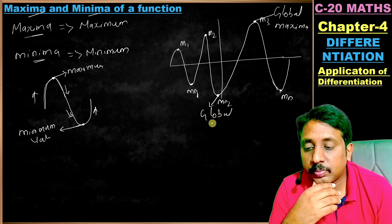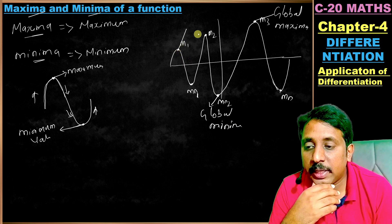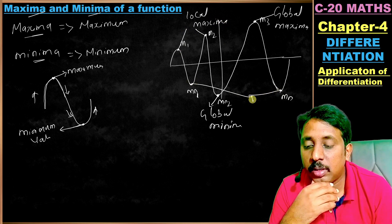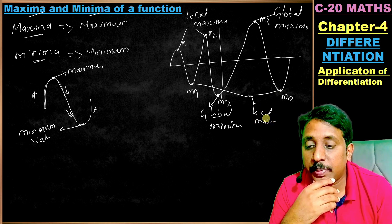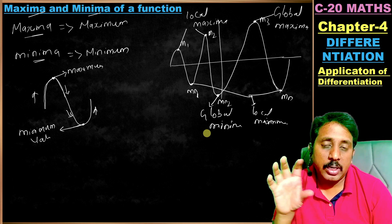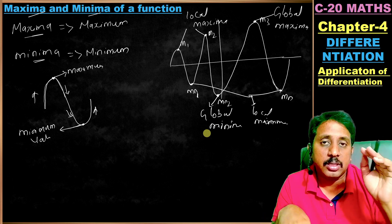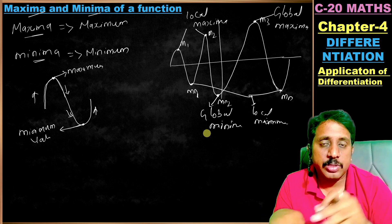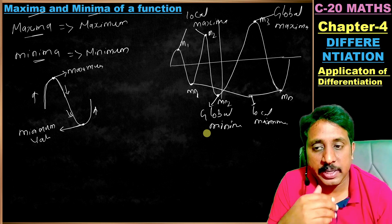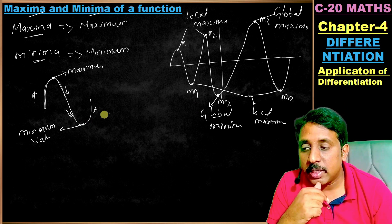The highest among all maxima is called the global maximum, and the lowest is called the global minimum. The remaining ones are called local maxima and local minima. We are concentrating only on local maxima and minima, not on global maxima or minima.